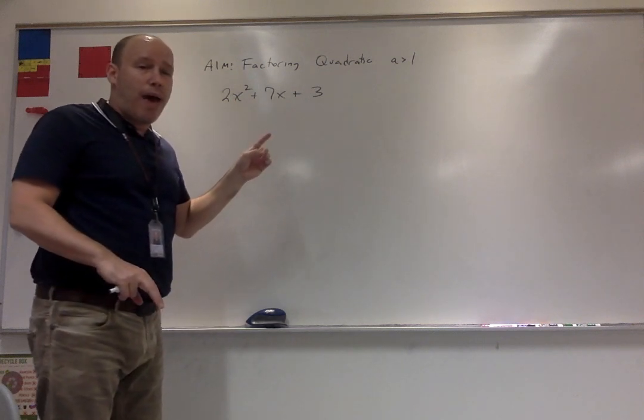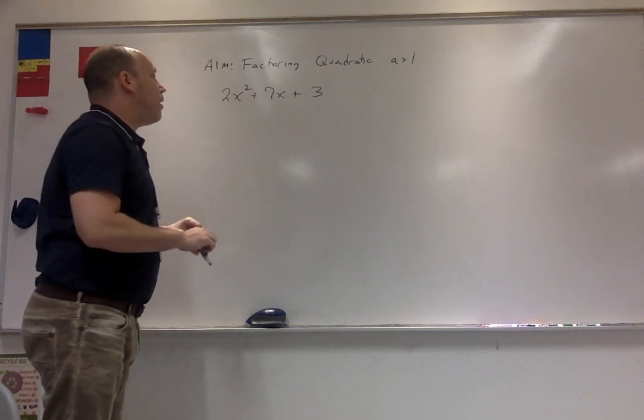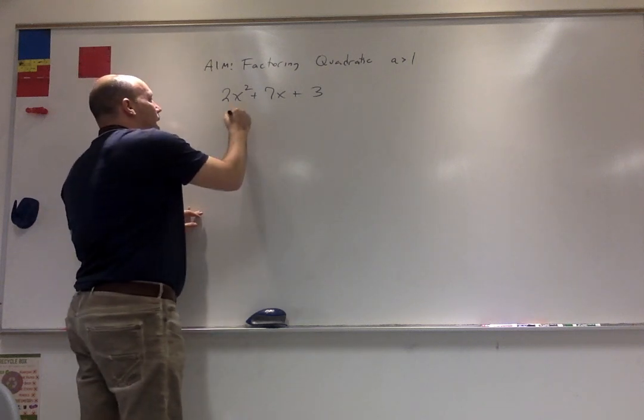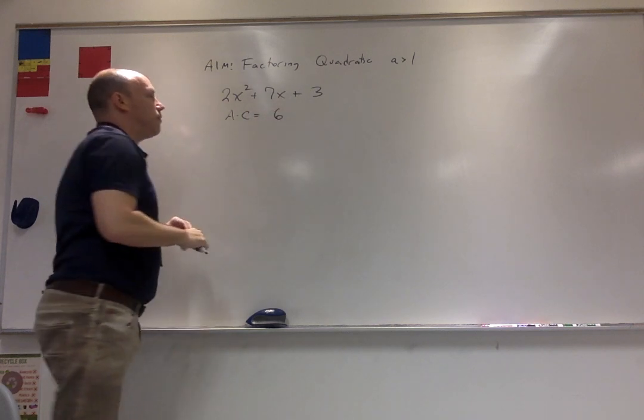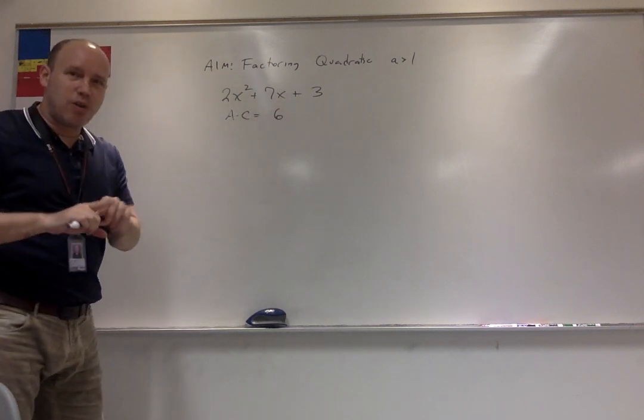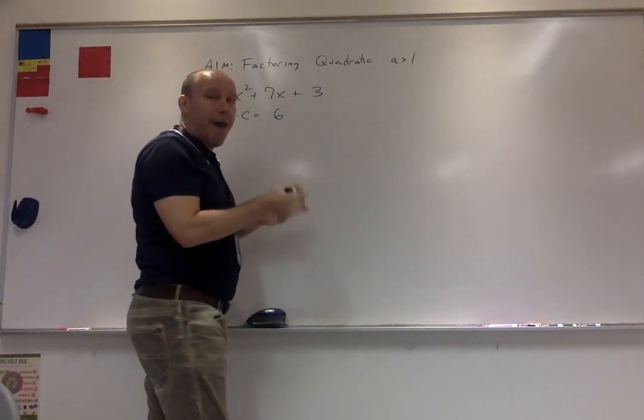So how do we factor this? Now we know that, so here's the technique. Step one, multiply a times c. That's 6, right? Step two, make a table of the factor pairs of 6 and look for a match.